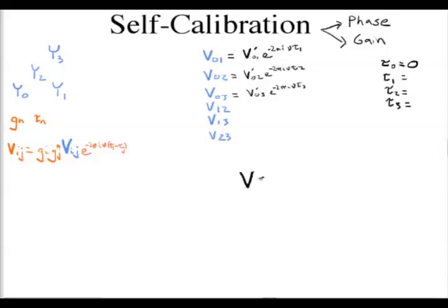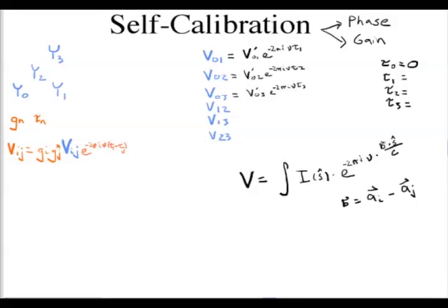Recall the measurement equation: visibility is an integral over the sky of intensity in a direction times e to the 2π i times the baseline vector dotted with the source direction, divided by c. The baseline vector B is the position of one antenna minus the position of the second. So in all these visibilities, the phase parameters — in this case antenna position — show up as a difference, just as delays show up as a difference.